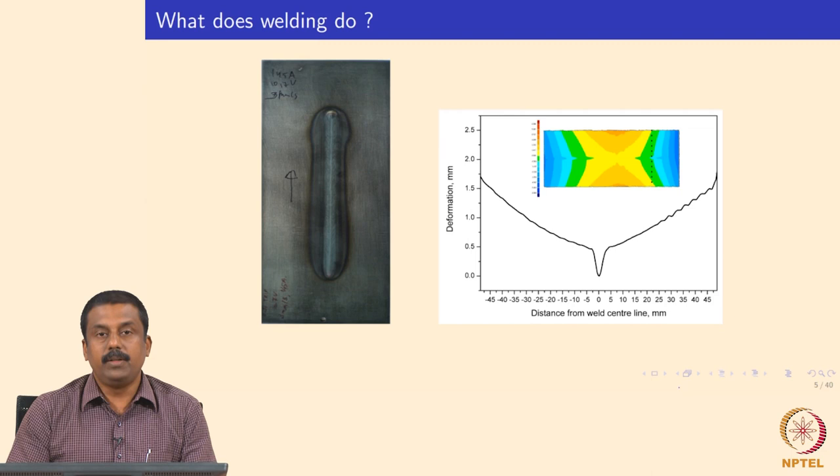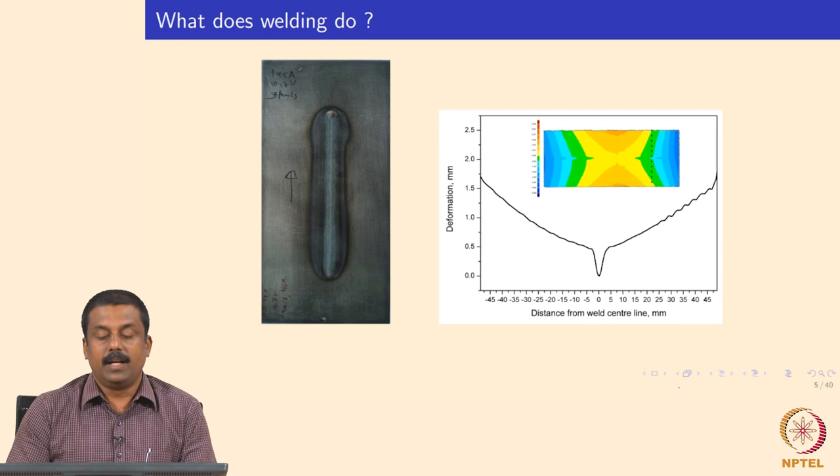We are not going to go into detail on residual stress evolution and distortion. We can assume that when welding, because of inhomogeneous strain development at various levels — macroscopic level, phase level, grain level, and crystal level — you may expect strain development that can lead to distortion.